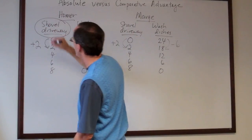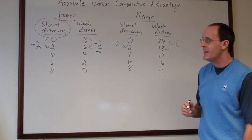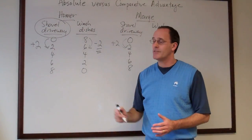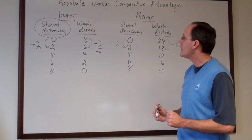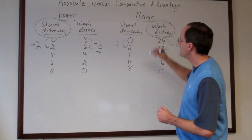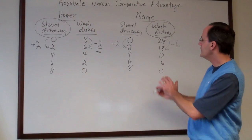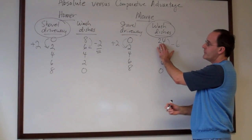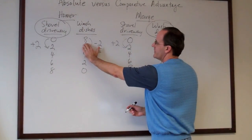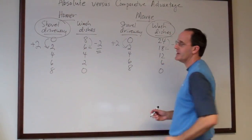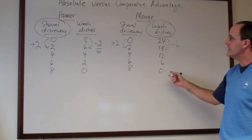I'm going to go ahead and circle that right here. That's what Homer should be doing. And of course, if Homer is specializing in shoveling the driveways, we want Marge to be the one who washes the dishes. And in case you're wondering why that has to be the case, just note that Marge is very much better at washing the dishes than Homer is. In fact, 24 is three times greater than eight. So that's her comparative advantage.